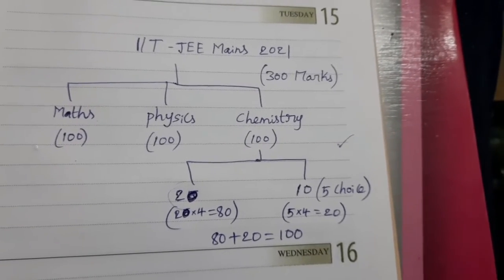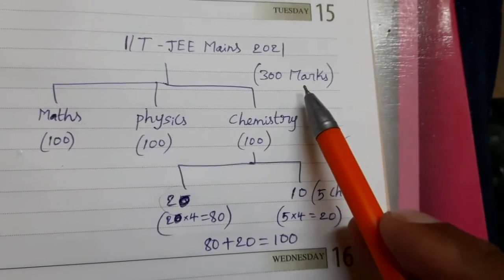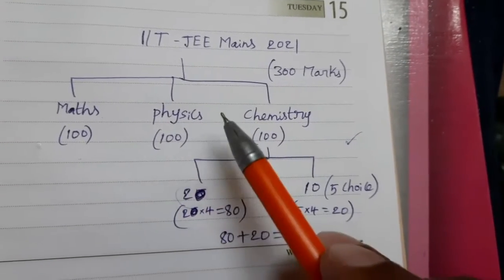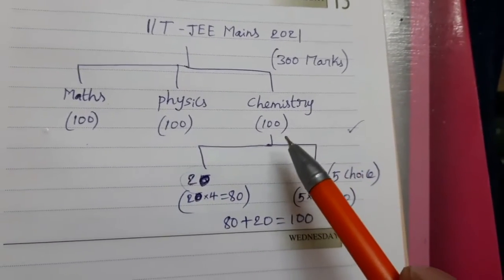In these three subjects are there. Total 300 marks exam. Math 100 marks, Physics 100 marks, Chemistry 100 marks.